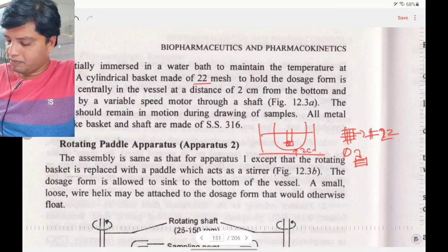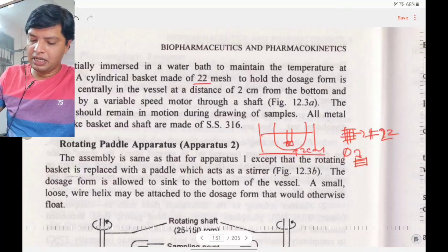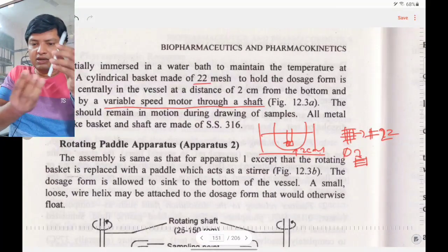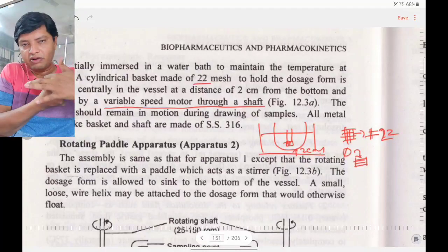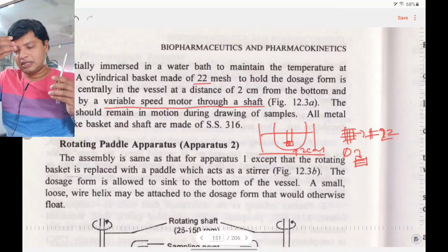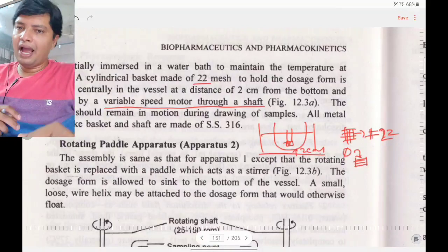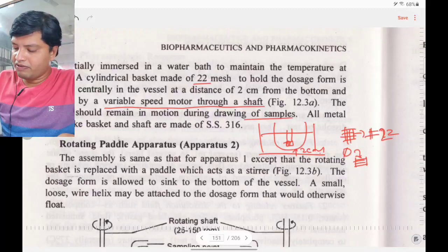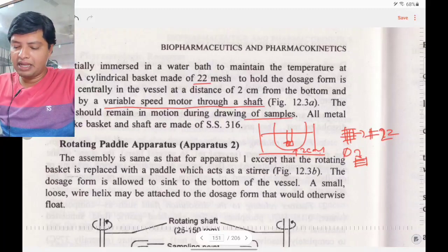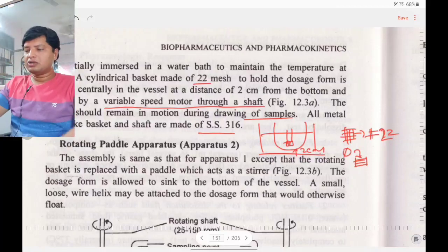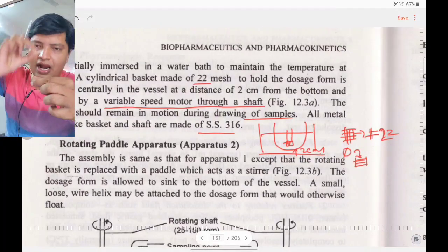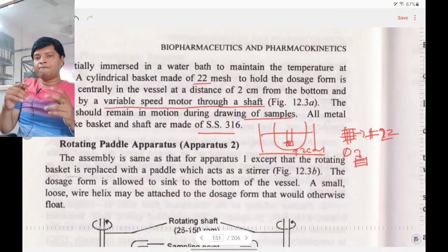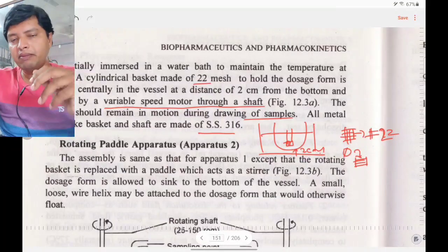The basket remains in motion during the drawing of samples. All metal parts, including the basket and shaft, are made of stainless steel. The dosage form is placed in the mesh basket, which rotates inside the hemispherical beaker partially immersed in the water bath maintained at body temperature.